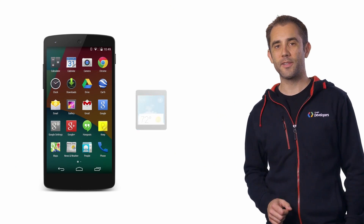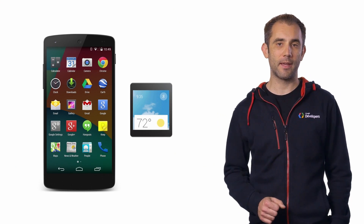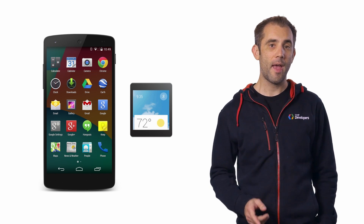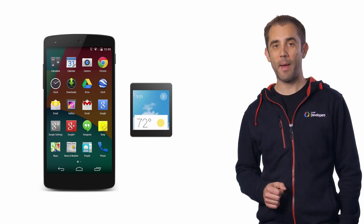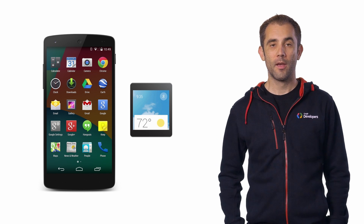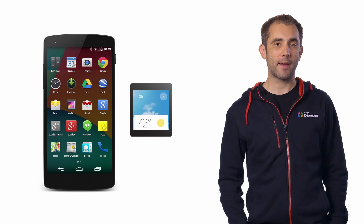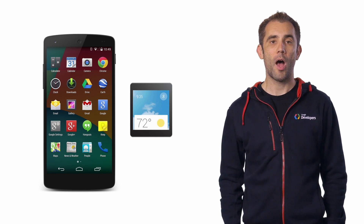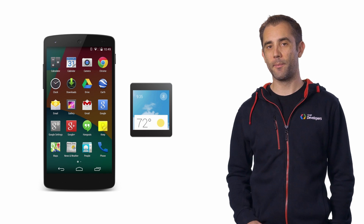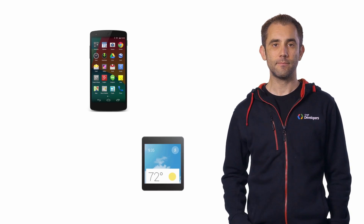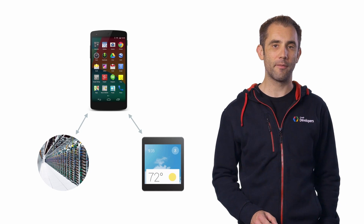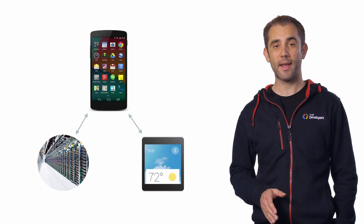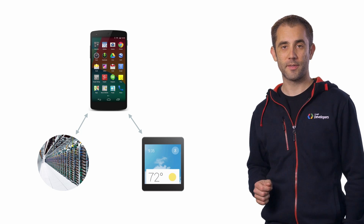The first thing to realize when designing your application architecture is that your phone typically has a much more powerful processor and a much larger battery than your wearable. So the best practice is to offload as much as possible away from the wearable to get the most battery life out of it. Another key part of the application architecture is that the phone has direct access to the internet while the wearable does not.